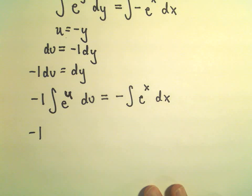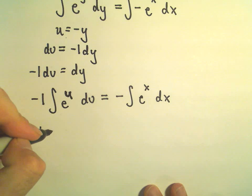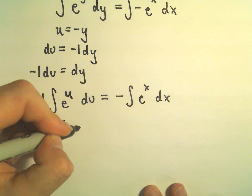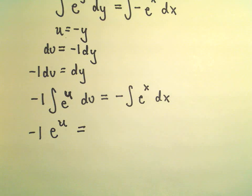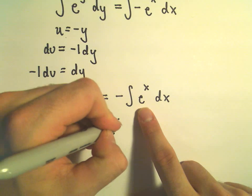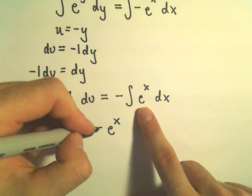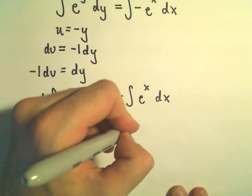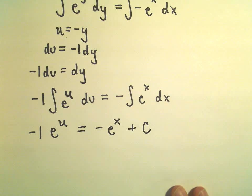And now we can integrate both sides. So on the left, the negative 1 comes along. The anti-derivative of e to the u is just e to the u. On one side or the other, we just have to stick our plus c, so I always just stick it on the right side. We'll integrate, we'll get negative e to the x. I'm going to stick my plus c on that side.